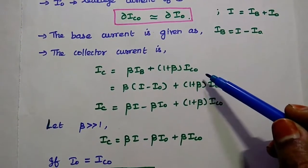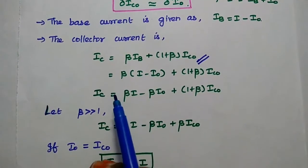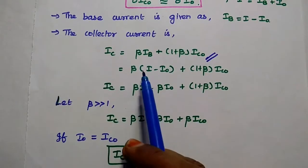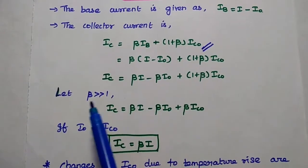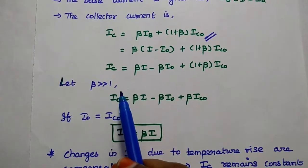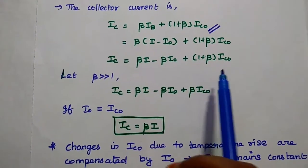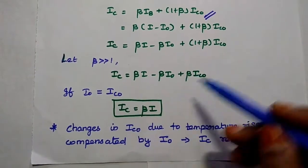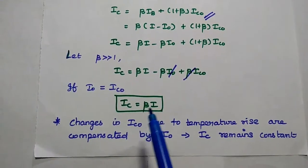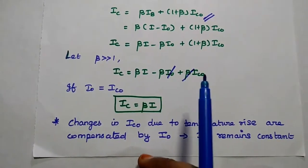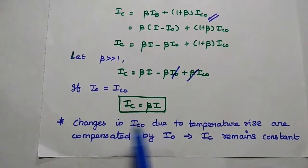The collector current formula is IC equals beta·IB plus (1 + beta)·ICO. Here IB is replaced with (I − IO). If the current gain beta is much greater than 1, we can neglect 1, giving IC equals beta·I minus beta·IO plus beta·ICO. Since IO equals ICO, these terms cancel. Therefore, IC equals beta·I. Changes in ICO due to temperature rise are compensated by the leakage current in the diode, so IC remains constant.